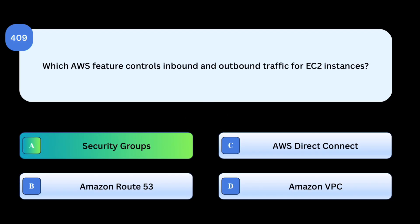Correct answer: Security Groups. Security Groups act as virtual firewalls for EC2, controlling inbound and outbound traffic. Why others are incorrect: Amazon Route 53 manages DNS, not traffic filtering. AWS Direct Connect provides private network connectivity, not traffic rules. Amazon VPC provides isolated networks, but not per-instance traffic control.